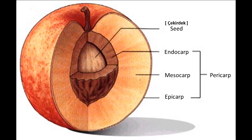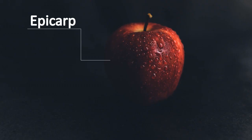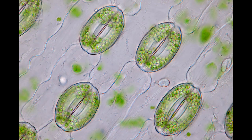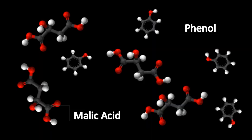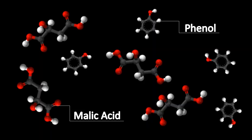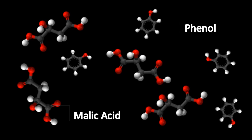An apple has 4 layers: epicarp, mesocarp, endocarp and seed. When we look from the outside, we first see the skin of the apple. Its scientific name is epicarp. 'Epi' means open and 'carp' means fruit in Greek. There are so many stomatal cells that allow air exchange by opening and closing. There are malic acids and phenols too — they impart sour and acidic properties to the apple.